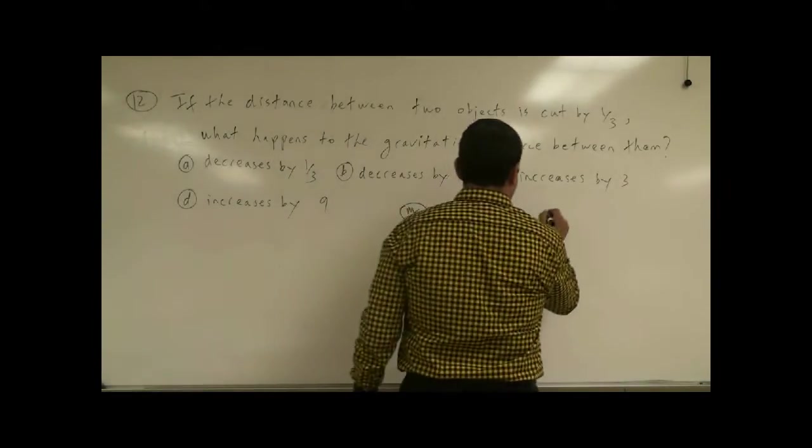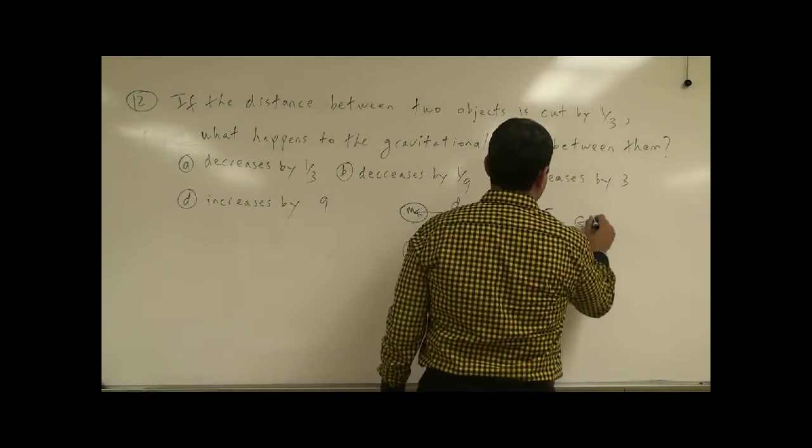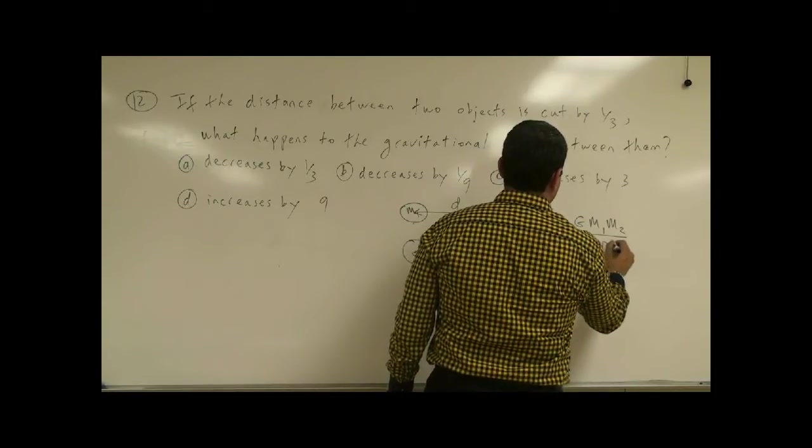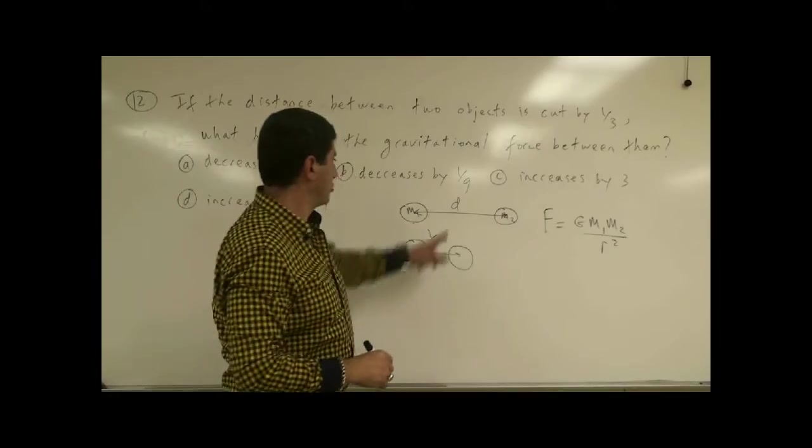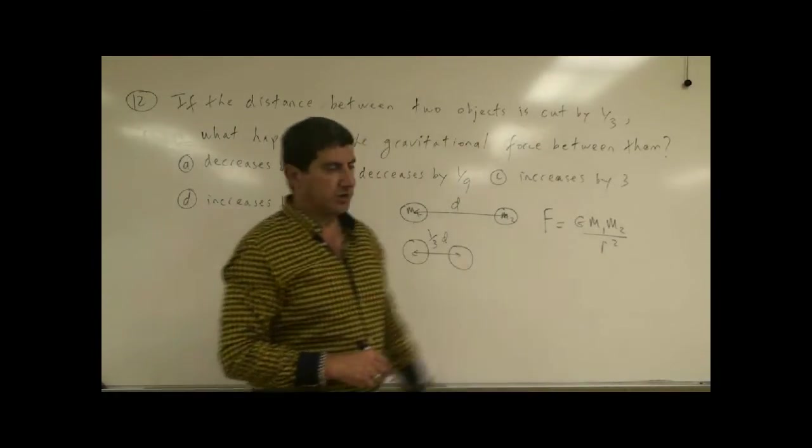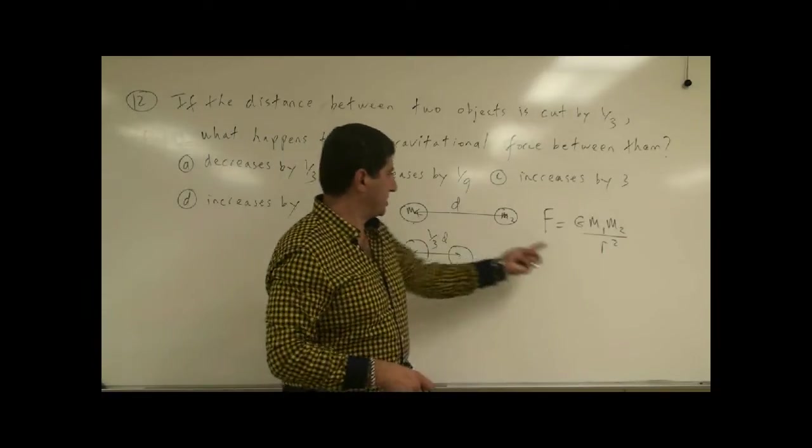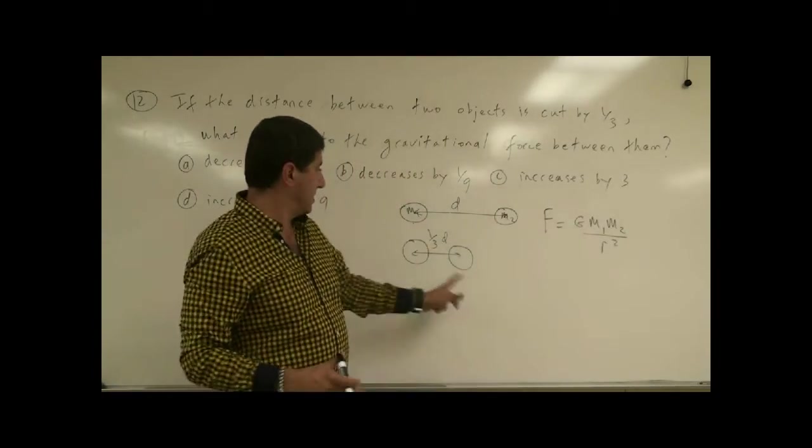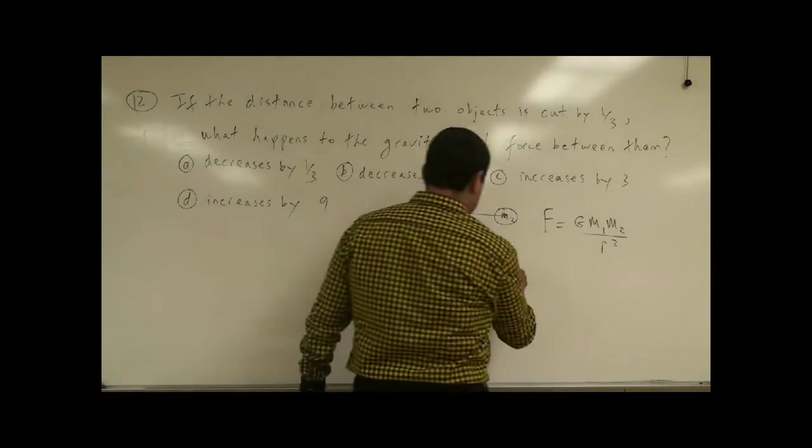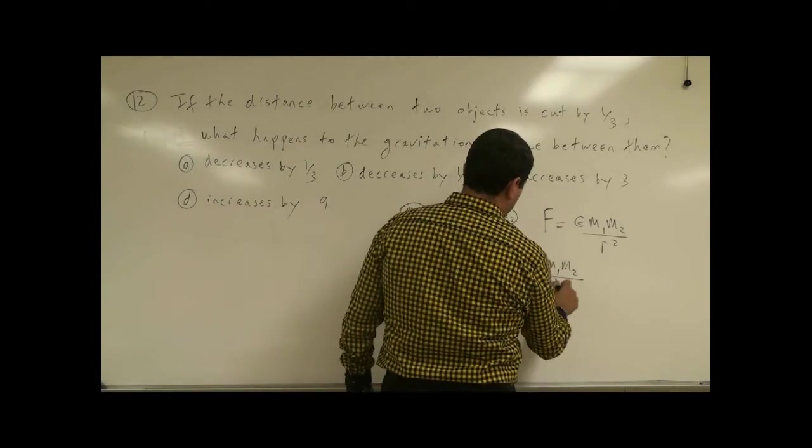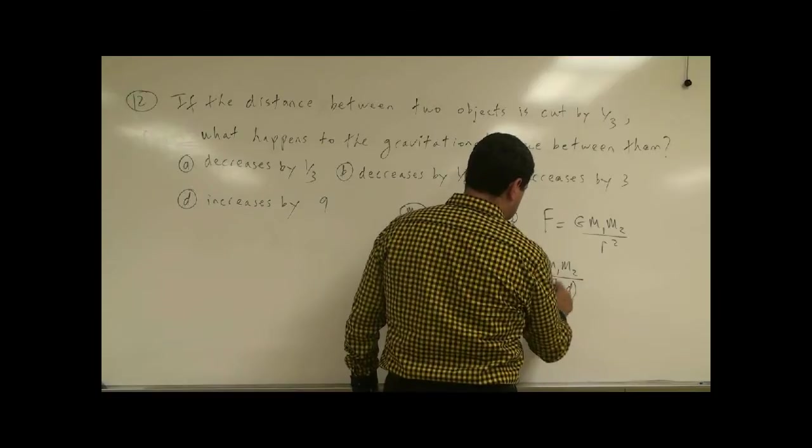Well, Newton's law of gravity, F equals G M1 M2 over their distance between them squared. So originally the distance is just, the R means radius or distance, so the original distance is R is just D, and then one-third D. So what happens, we get G M1 M2 over one-third D quantity squared.